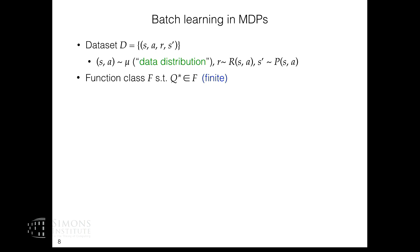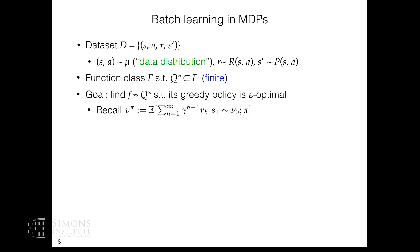For learning, we have a function class F that captures Q* — this is realizability. We assume F is finite and want only logarithmic dependence on the cardinality of F. The final goal is to learn a function F̂ that approximates Q* such that its greedy policy is near-optimal, meaning the policy we find is epsilon-close to the best possible policy when evaluated under the initial state distribution.